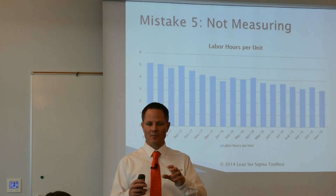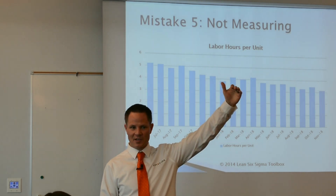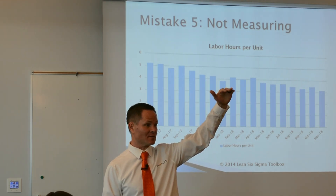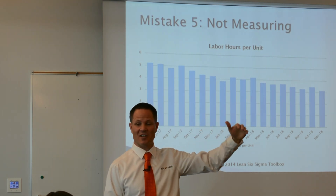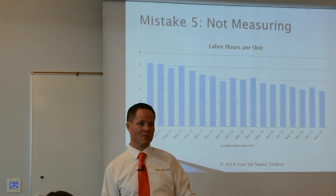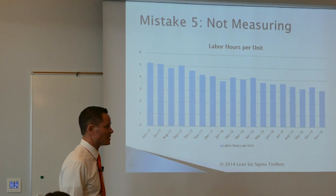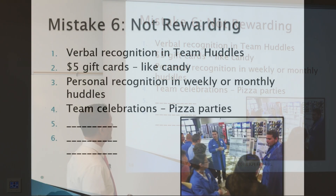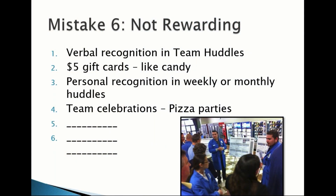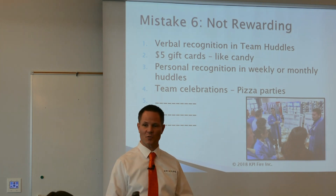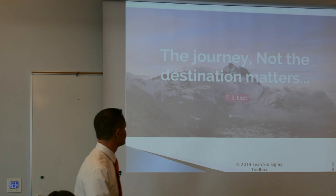At an electronics manufacturer, we set a goal at what the team could actually hit — say 40 units per hour — let them get used to winning, then progressively raised the bar until they were hitting the original target. They got used to winning, and everyone was happy. You have to know what winning means. Mistake number five: not rewarding. Give gift cards, say thank you, encourage the behavior. The carrot is more fun than the stick — use the carrot.